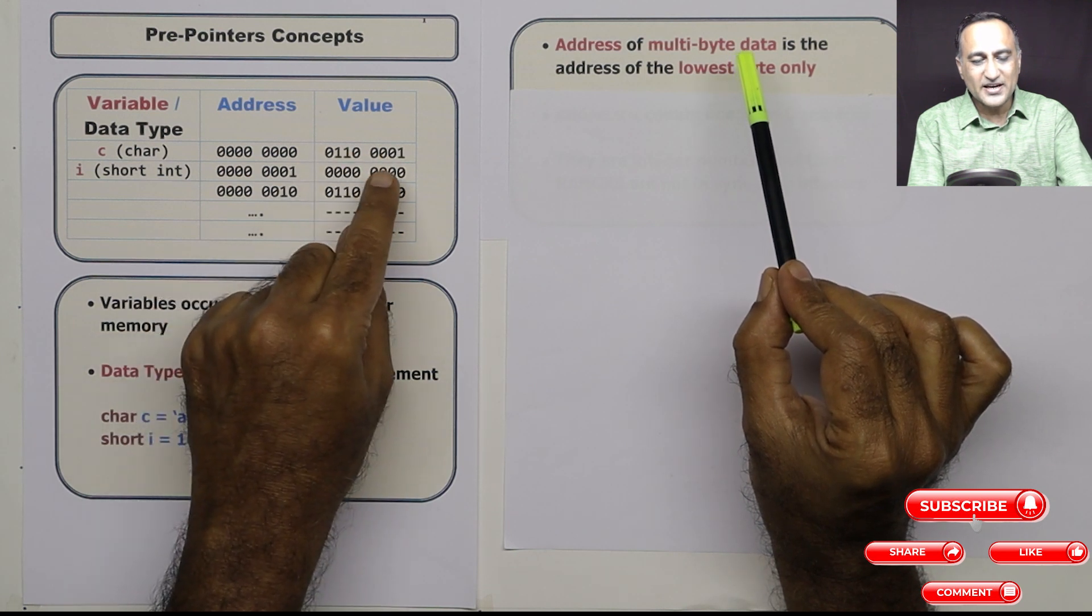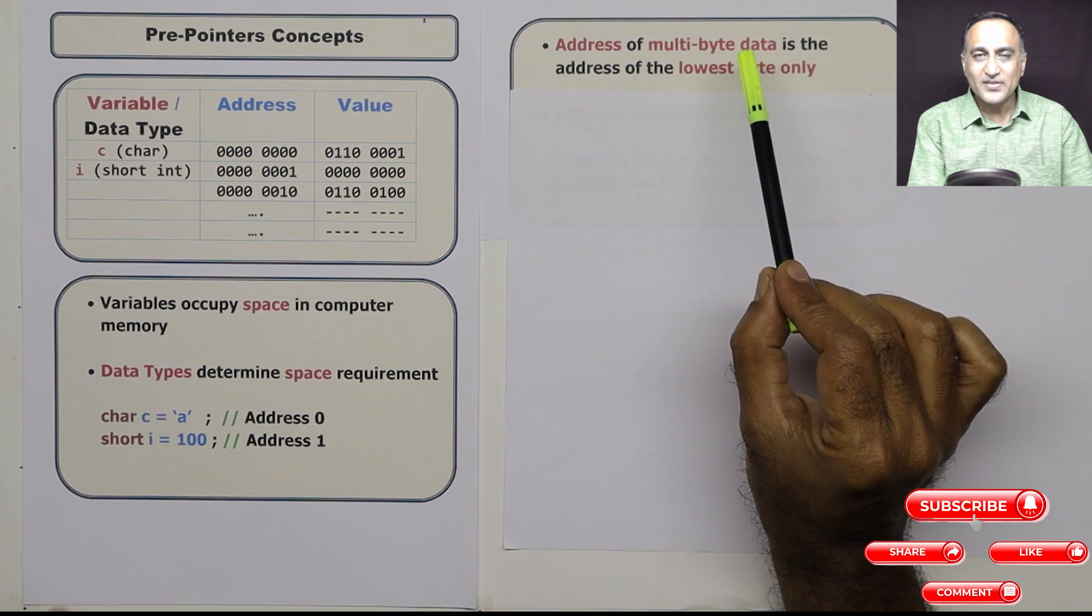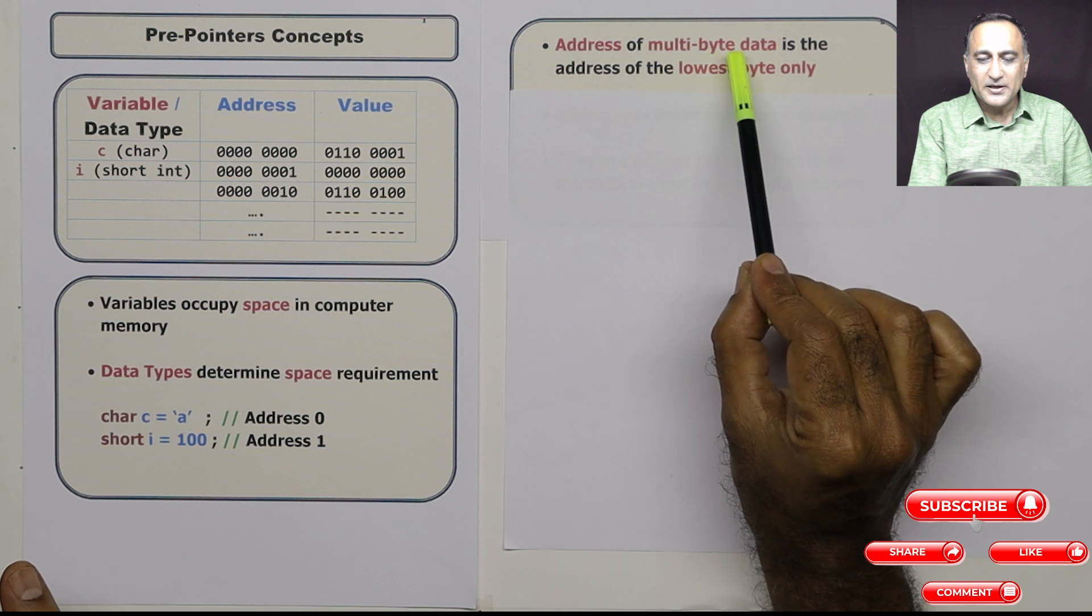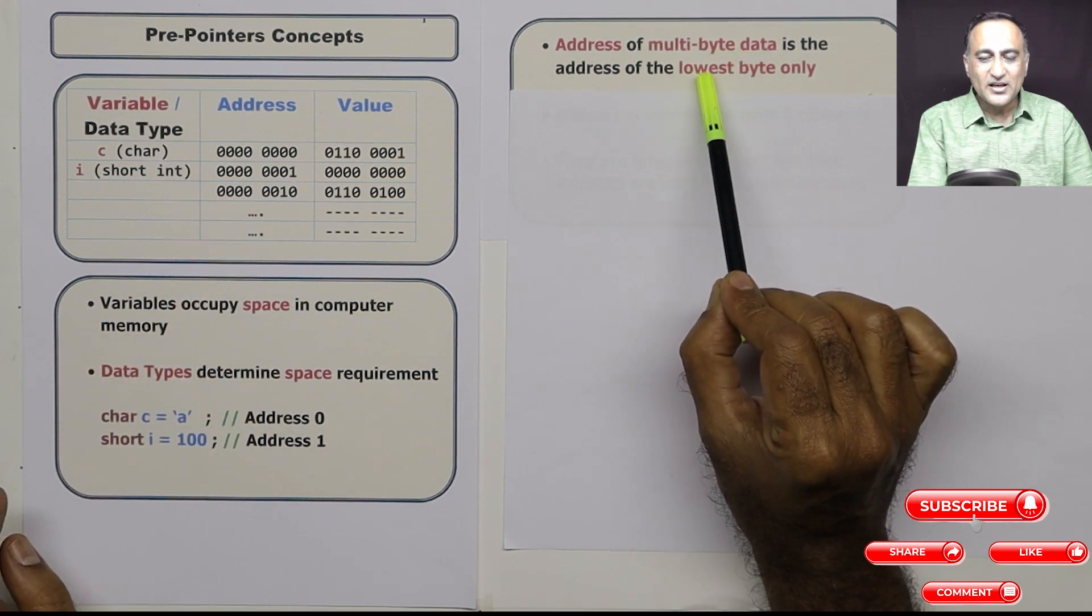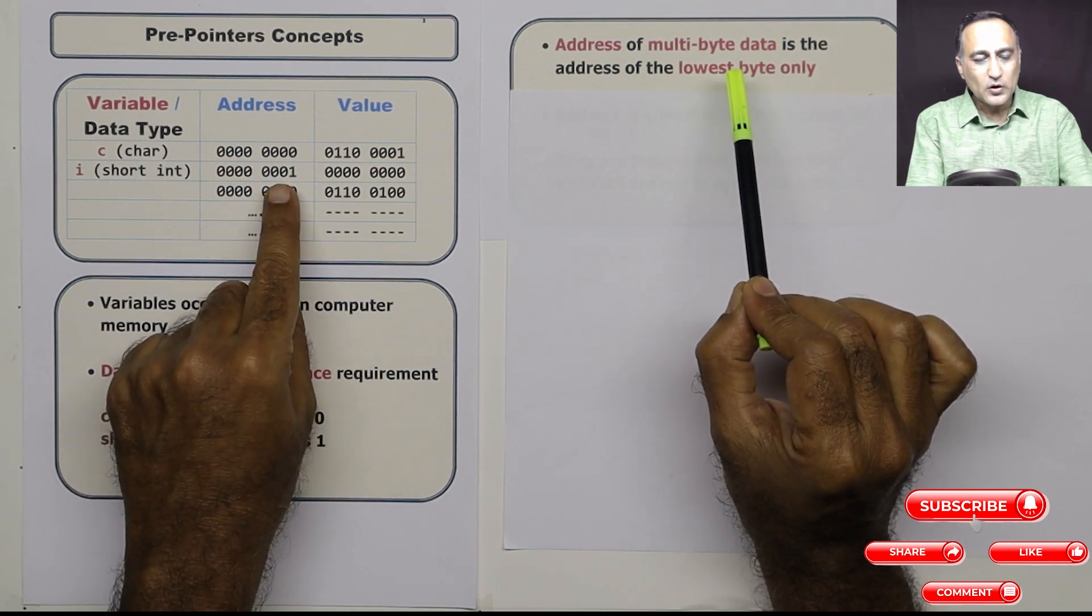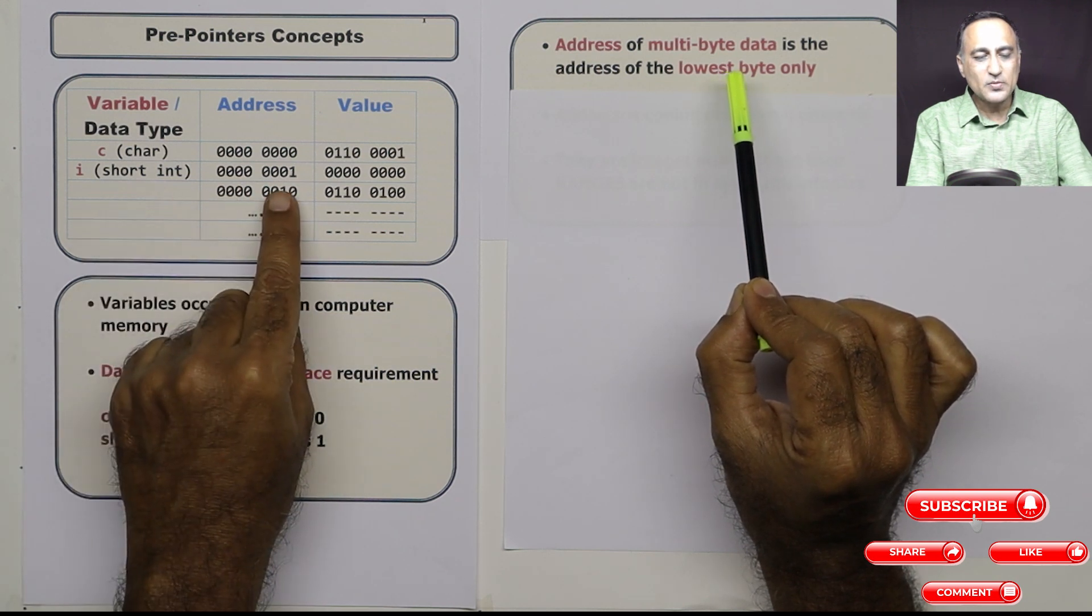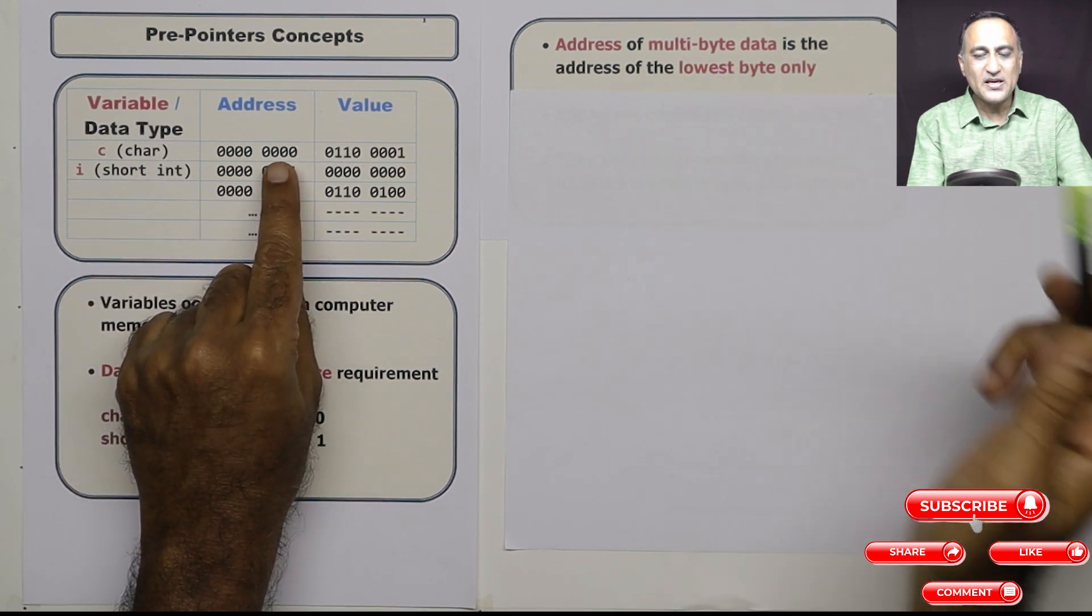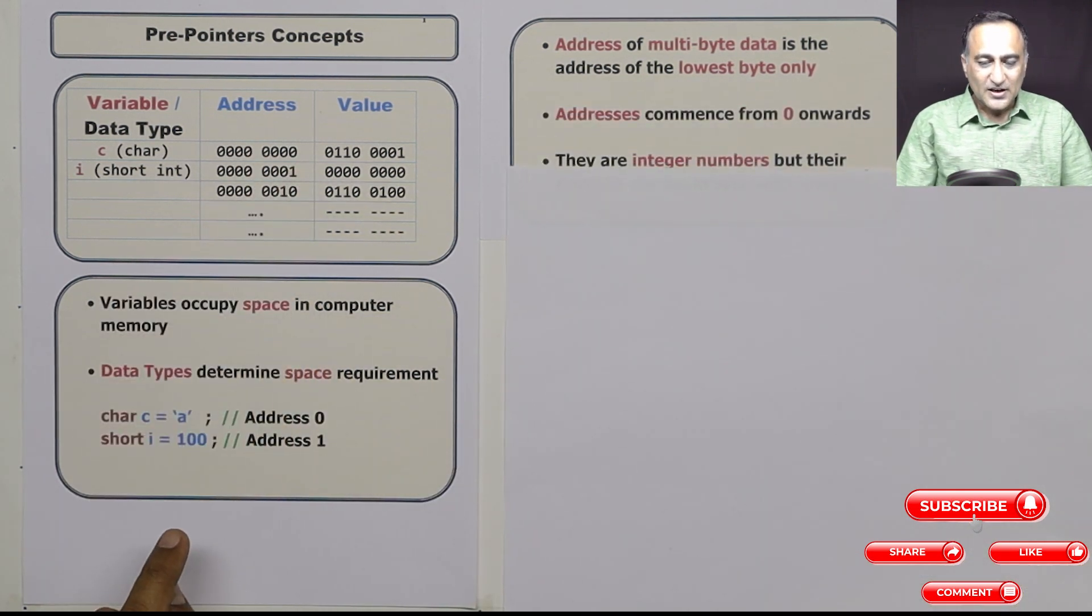This is one byte, this is the second byte, this is the third byte. Character one byte is enough, but short int the range is two bytes. So although short int is a multi-byte data, the address is the address of only the lowest byte. So the lowest byte happens to be one. So the address of int happens to be one, address of char happens to be zero. So this is the address of int and char.